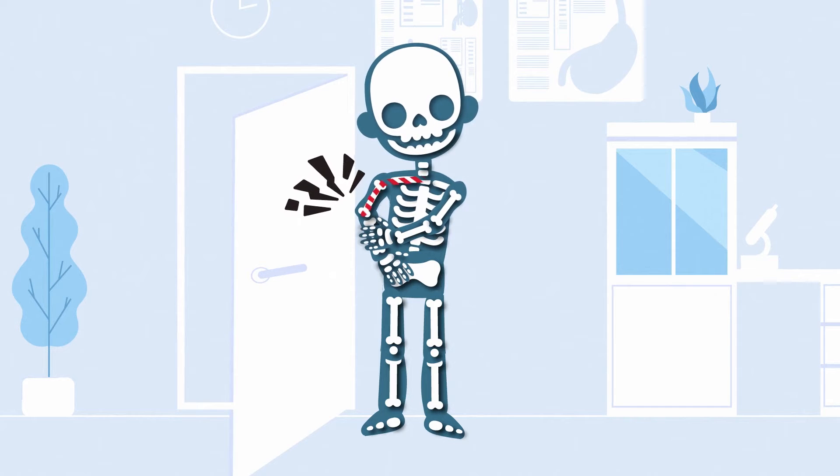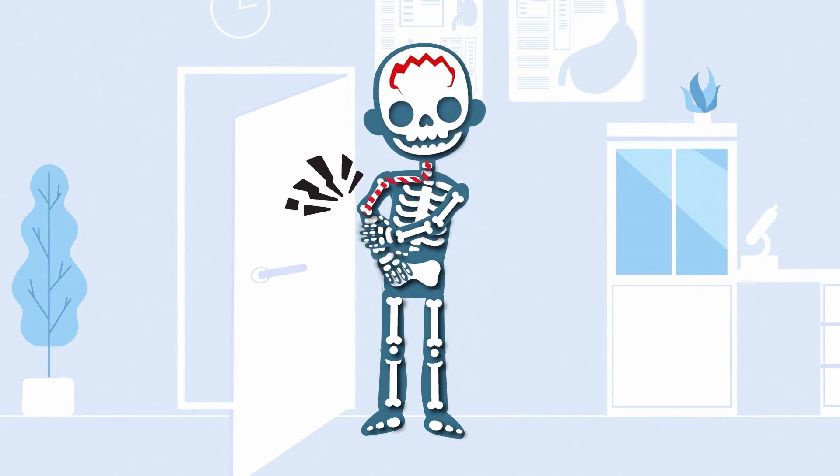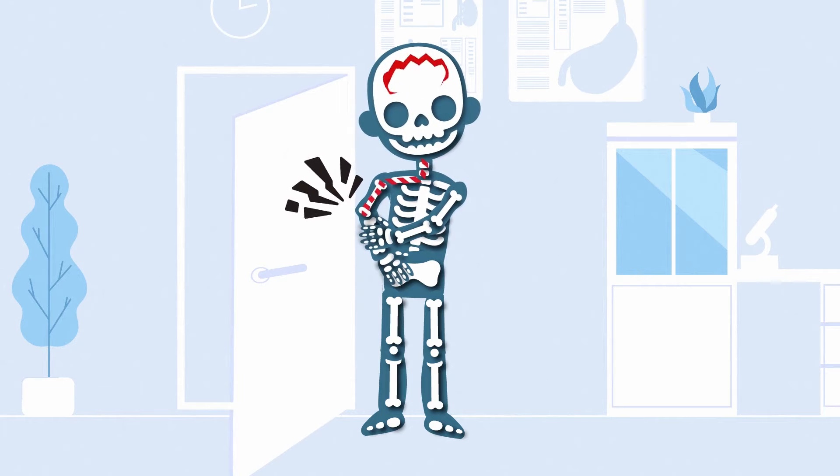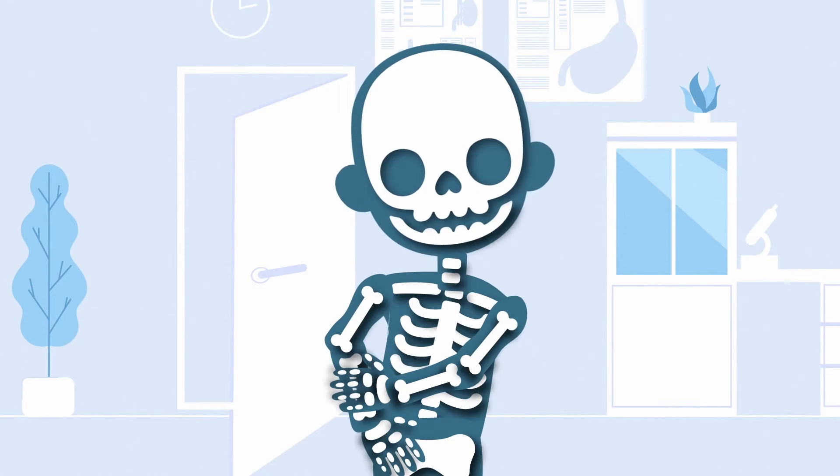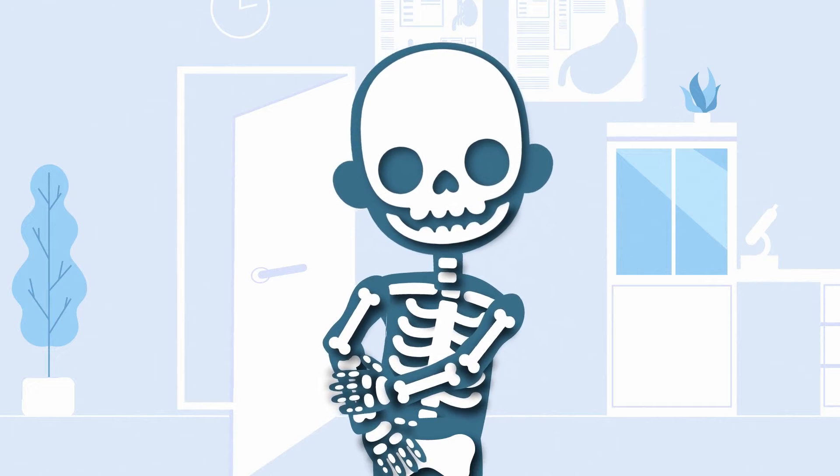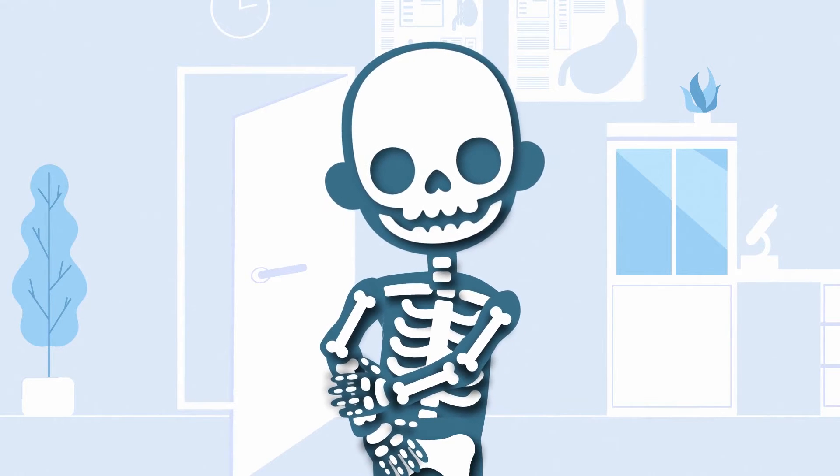When you hit this nerve, it sends a message up your arm to your brain letting it know you haven't caused some harm. The funny bone got its nickname because of that funny feeling you get after you hit it.